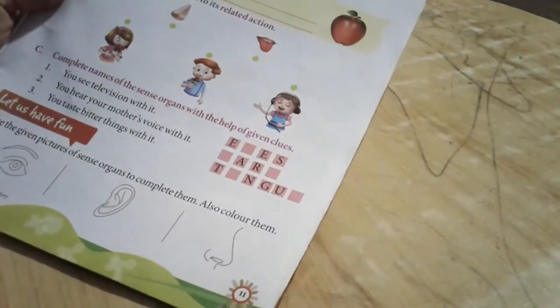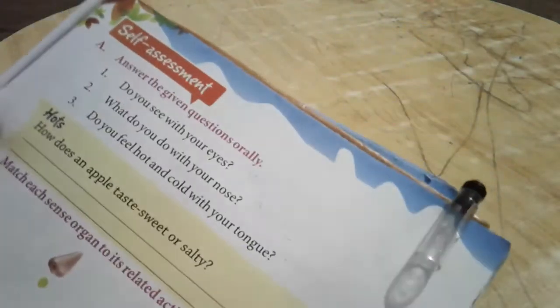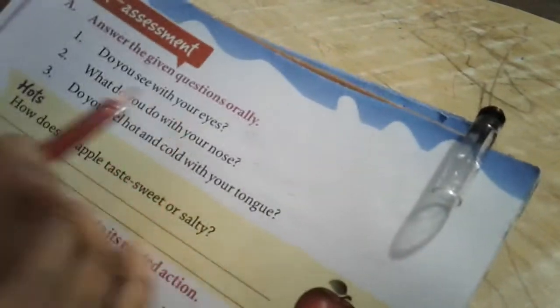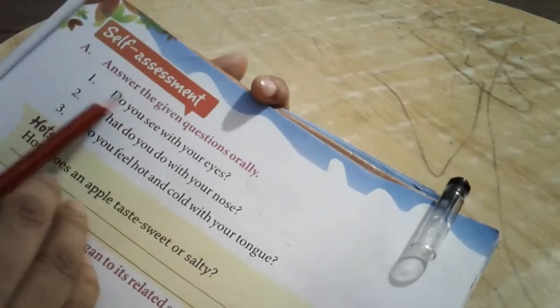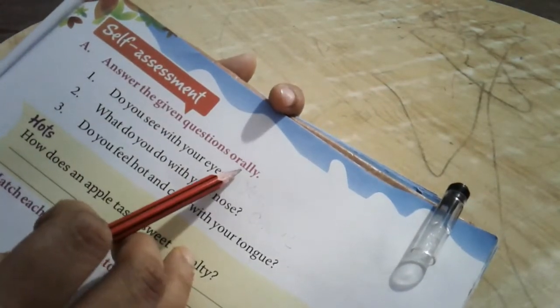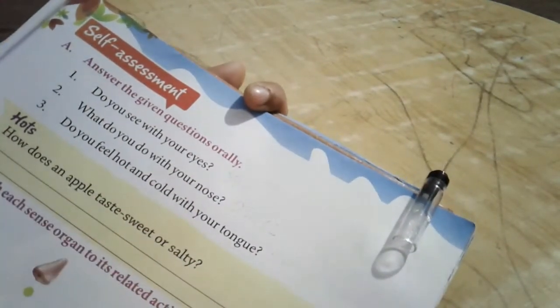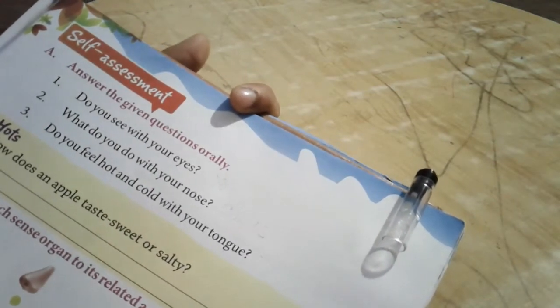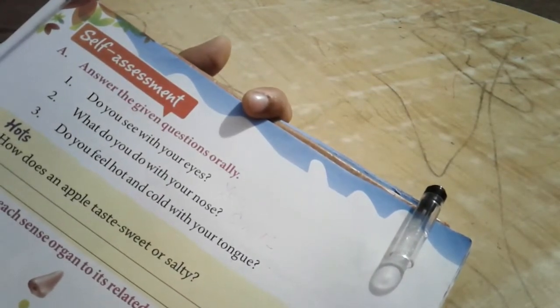So children, come to page number 11 of your green environment book. We have got a self-assessment for sense organs. So let's begin. Answer the given questions orally. If you have to answer it, then we will write one word or as short as possible.